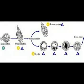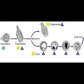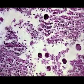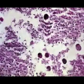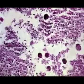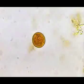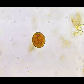Once the cyst is ingested and reaches the small intestine, the contained trophozoites are released and continue to travel to the large intestine. Once they have arrived at the large intestine, the trophozoites multiply through binary fission and produce cysts. Both the cysts and the trophozoites are then passed through the intestine and expelled in the feces. Because of the protection the trophozoites receive through the cell walls of the matured cysts, they can survive anywhere from days to weeks in the outside environment and are therefore responsible for the transmission of the parasite.